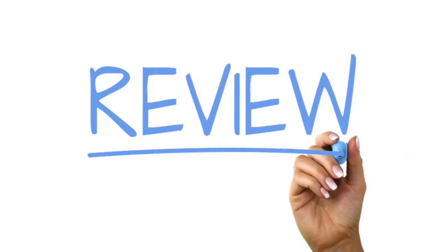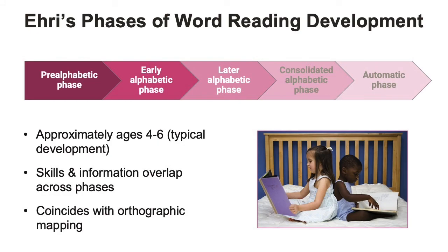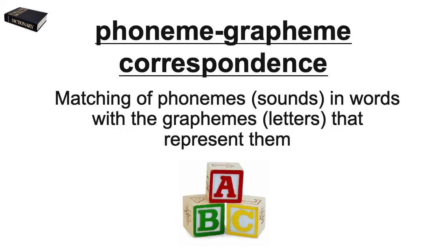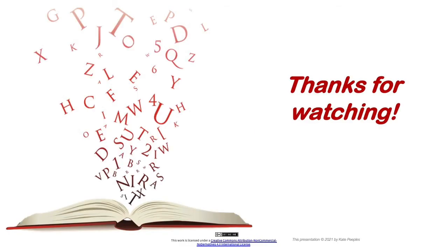Now let's review the key information covered in this video. We examined the five phases on the Continuum model of word reading development, which shows the progression of children learning to read words. We also explained the importance of the alphabetic principle and phoneme-grapheme mapping in building sight word knowledge. This model covers ages approximately 4 to 6. We defined the terms alphabetic principle, phoneme-grapheme correspondences, and sight words, and clarified some of the misunderstandings about sight words and how children actually learn them. That's all for this video — thanks for watching.